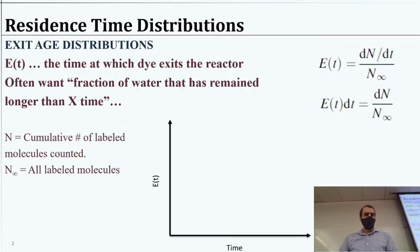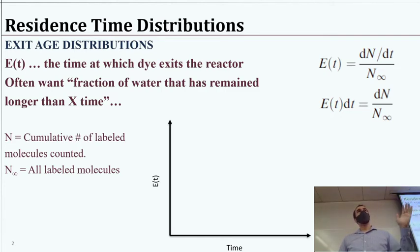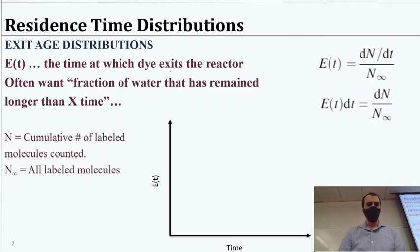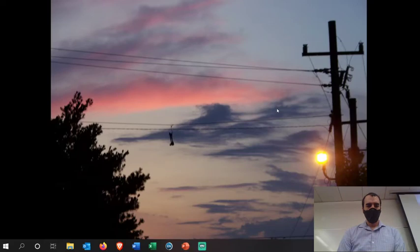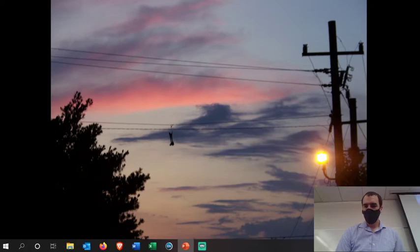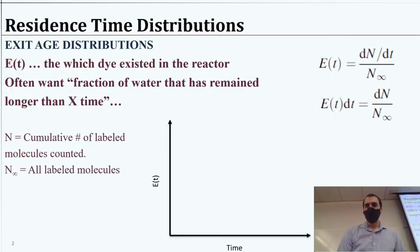We're going to start with E(t) — the exit age. This is essentially the time that a given dye molecule existed in the reactor — some amount of time that it was there.